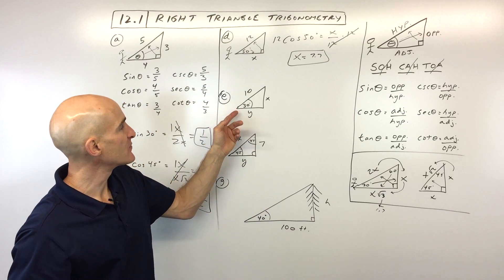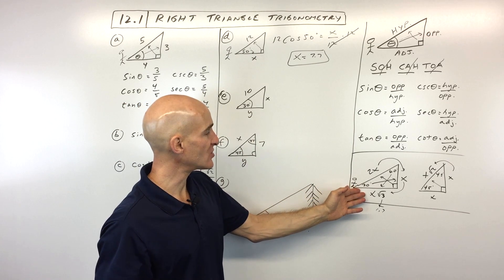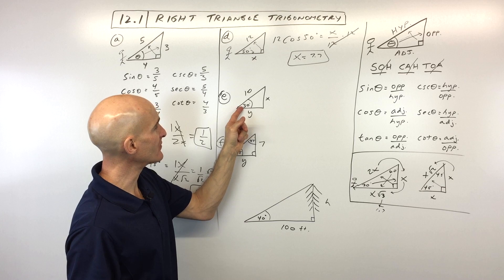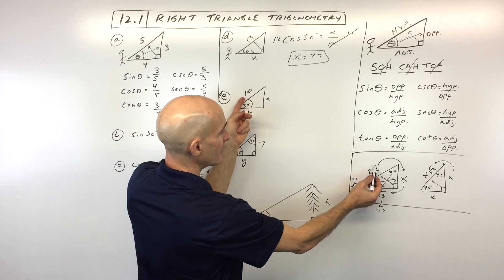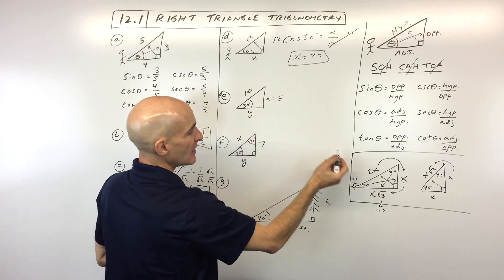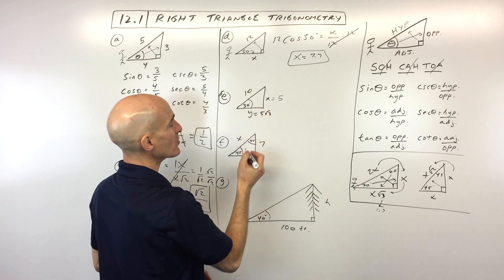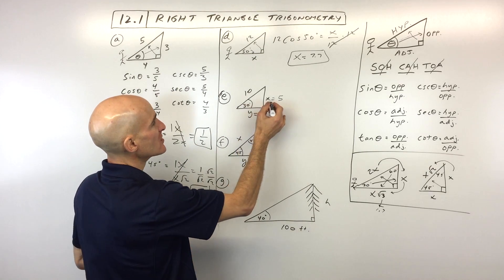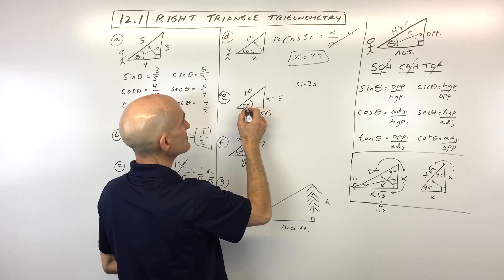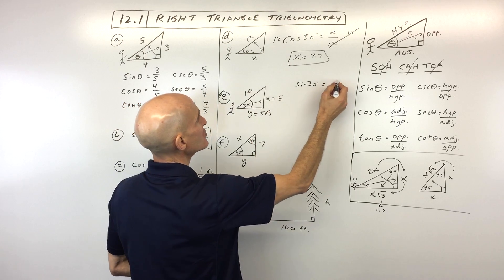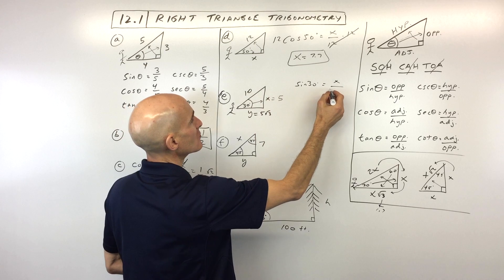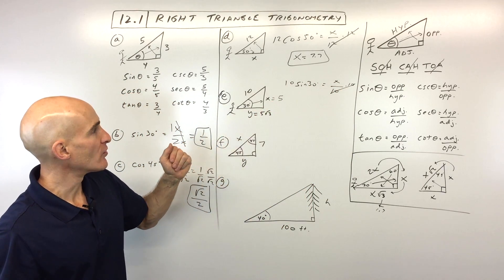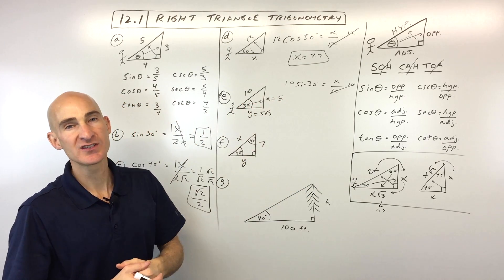For example E, this can be done two ways — using the special right triangle or the trig functions. Using the 30-60-90 triangle: they give us the hypotenuse, which is 2X = 10, so X equals 5. The longer leg Y equals 5 square root of 3 — an exact answer. Alternatively, using trig: sine of 30 degrees equals opposite over hypotenuse, so X over 10. Multiply both sides by 10 to get 10 times sine of 30, which gives 5 on the calculator.